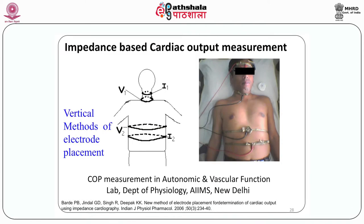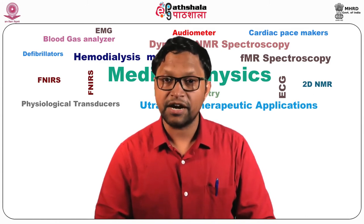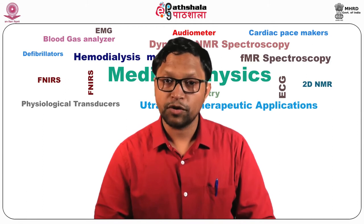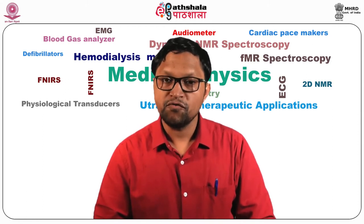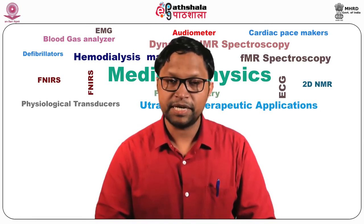Since impedance plethysmography measures the volume flow to the area, when the electrodes are placed across the chest, the measurements provide the value of cardiac output. This is called impedance cardiography. This has been validated with standard techniques like thermodilution and Fick method. The middle trace shows the typical record of thoracic impedance waveform from which cardiac output can be calculated by using well-established equations.